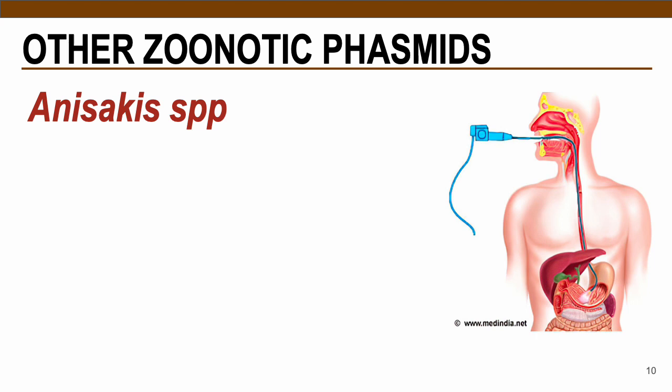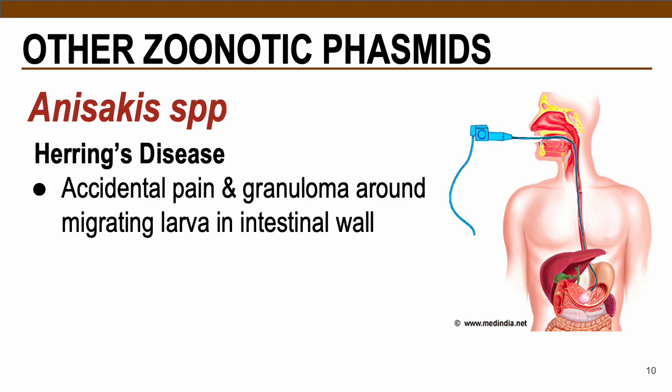In terms of pathology for Anisakis species, this is called herring's disease — characterized by abdominal pain and granuloma formation around the migrating larva in the intestinal wall. Granulomas are tiny clusters of white blood cells and other tissues, found in the lungs, skin, or other parts of the body, forming as a reaction to infection, inflammation, irritants, or foreign objects.